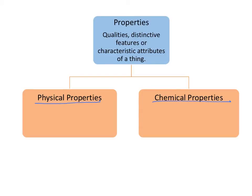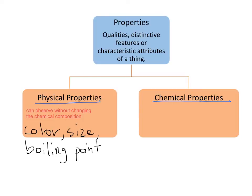So let's start with physical properties. Physical properties is a property you can observe without changing the chemical composition. So that would be like color, or size, or shape, or even boiling point. Because when you boil a liquid, it's still the same chemical structure, it's just now a gas instead of a liquid.